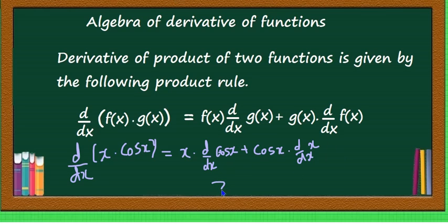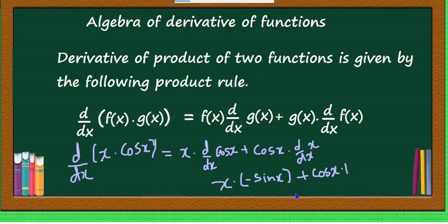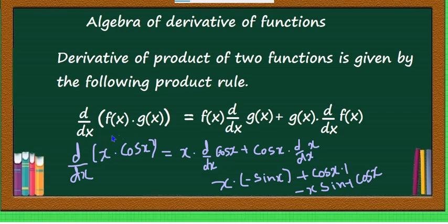In the next step, applying the standard formulas: derivative of cos x is minus sin x, so we get x into minus sin x, plus cos x into d by dx of x, which is 1. This simplifies to minus x sin x plus cos x. This is the derivative of the product of the two functions.